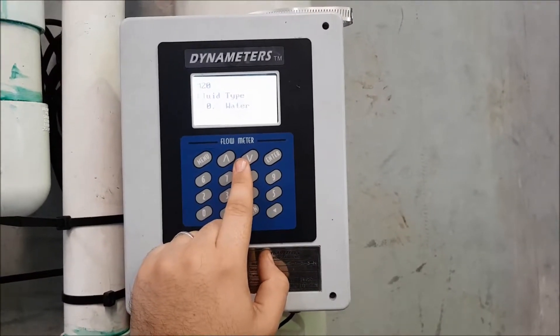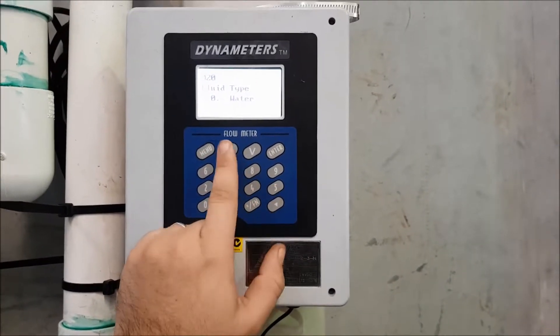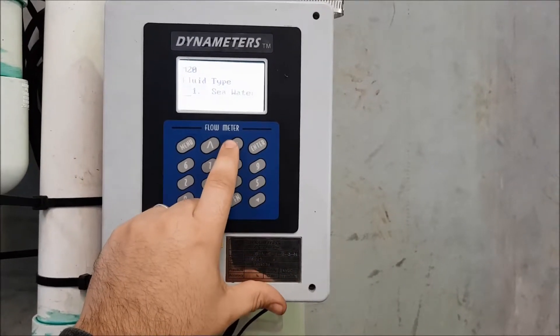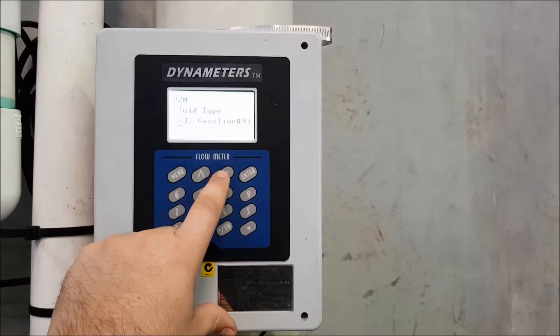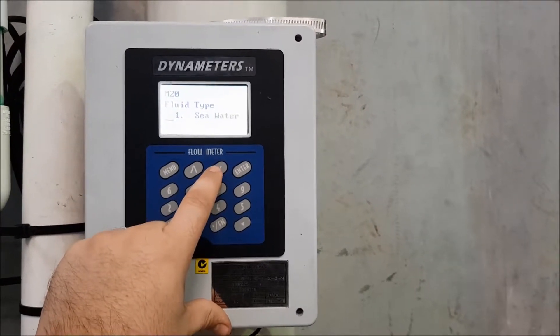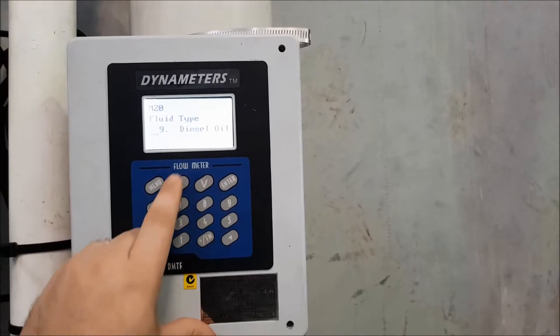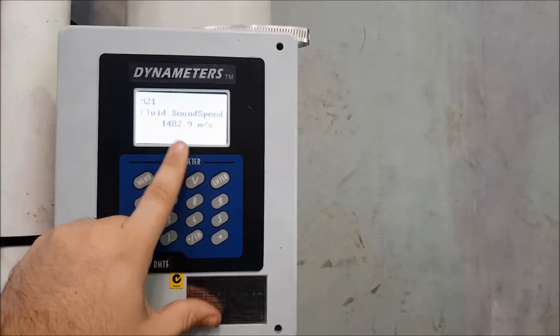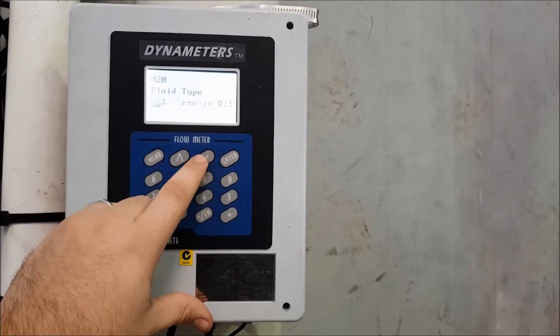Fluid type, again, similar to before, you just select what's in your pipe. In this case, I have water, but changing it is the same. You just scroll through, use one of the ones that are pre-programmed. Or you can select other, and it unlocks the next menu in which you can manually type in the sound speed of your fluid. But I'll select water.